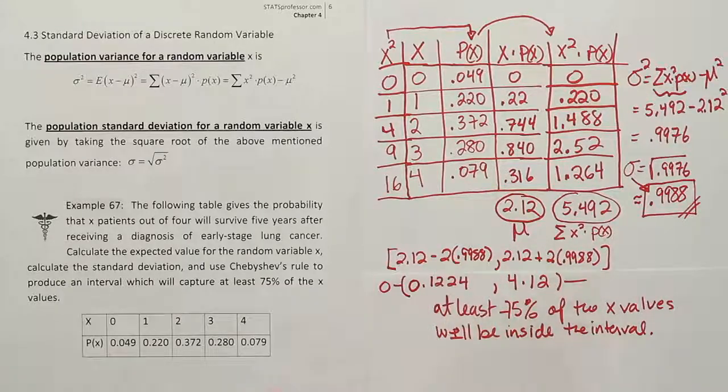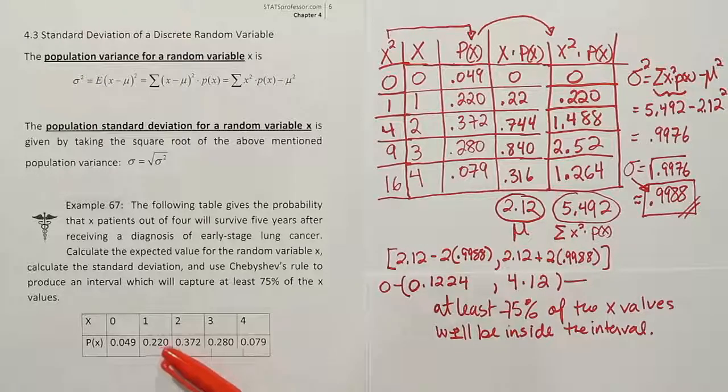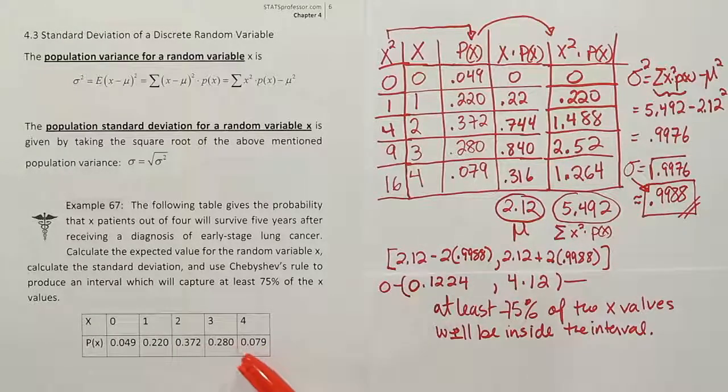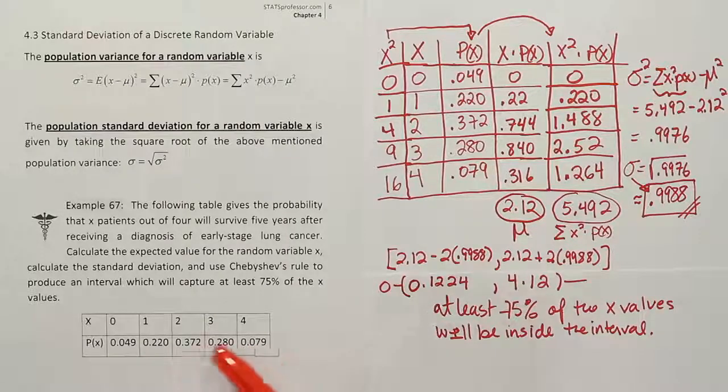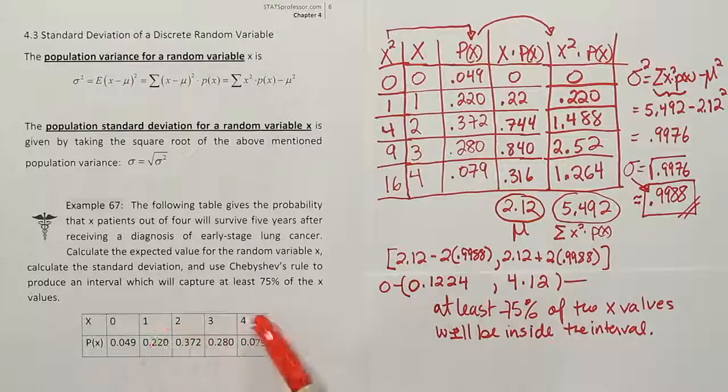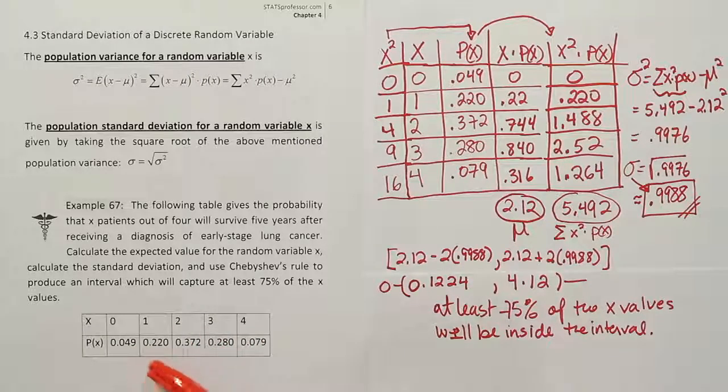And actually, you don't need either one of these rules. You could just add up these probabilities, right? What's the probability that you have between 1 and 4 people surviving the cancer after 5 years? Well, add these numbers together and you'll get your answer. And since this is the only one outside of that span from 1 to 4, and this one's about 5%, sure enough, the probability here is about 95%.